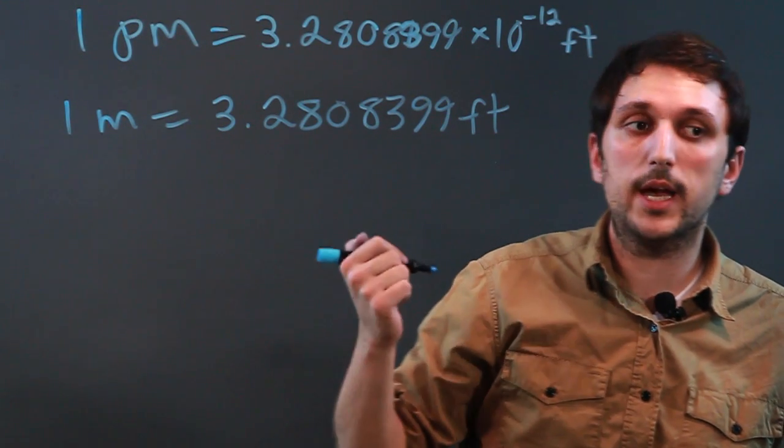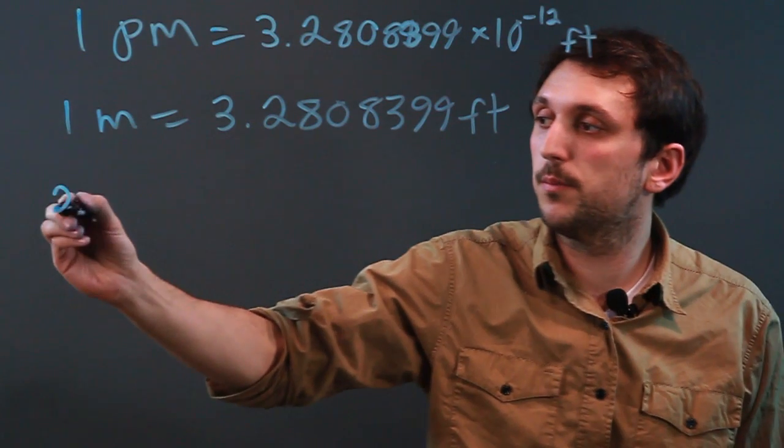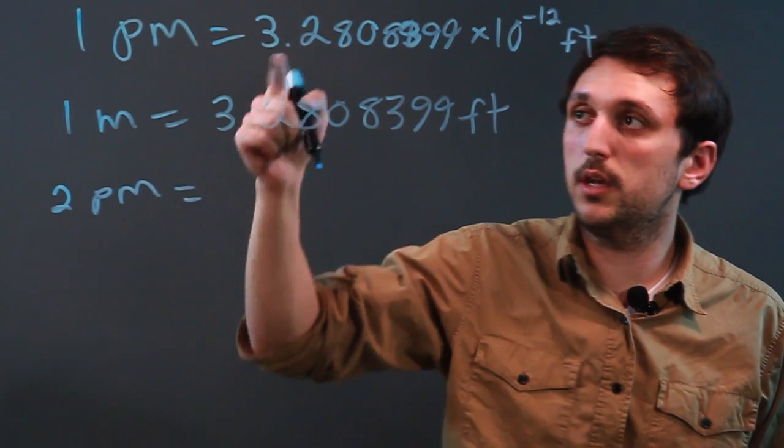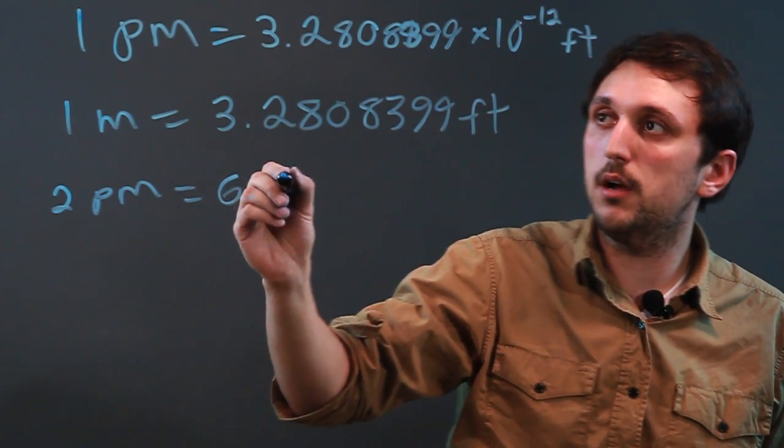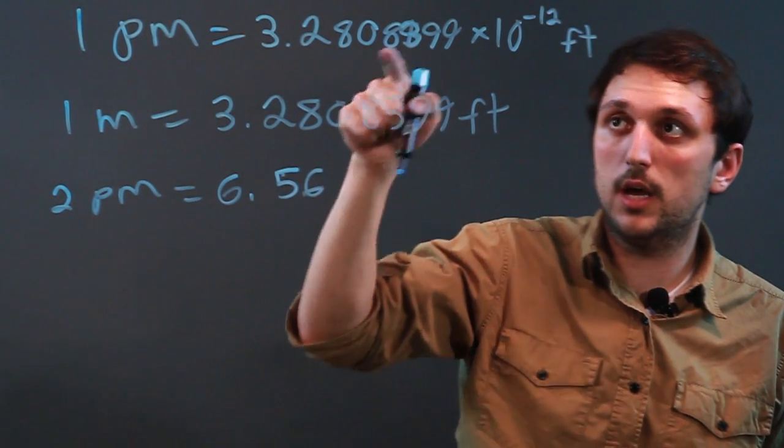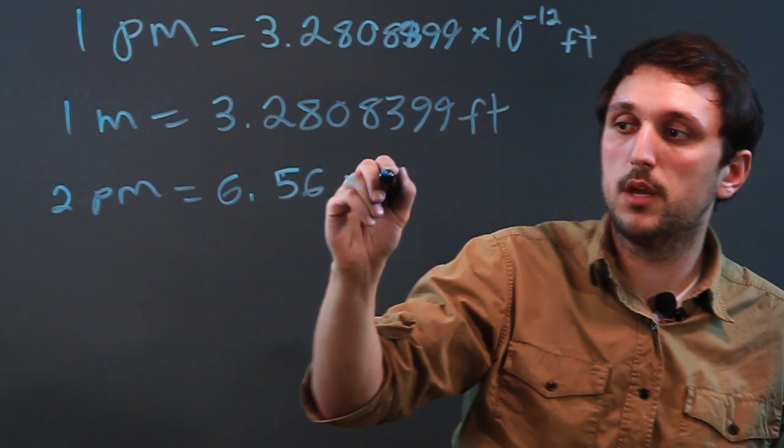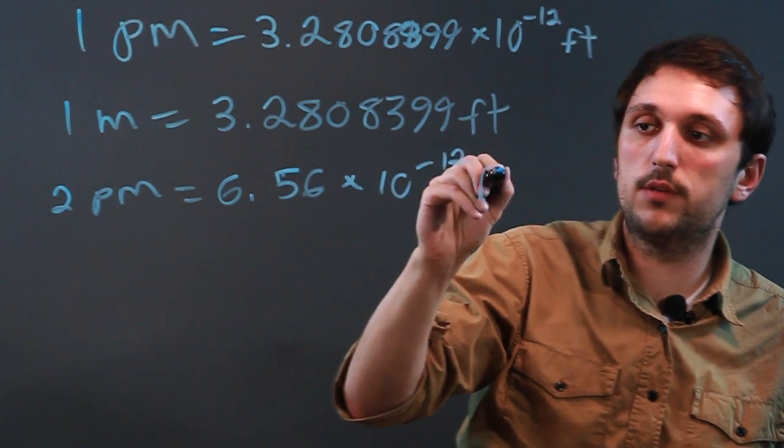So let's say we had two picometers. We would just double it and we'd have roughly 6.56 and all these decimals times 10 to the negative 12 feet.